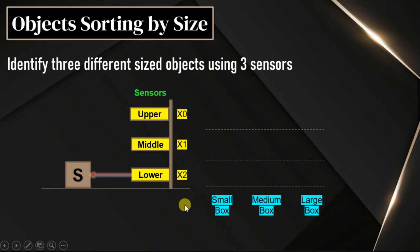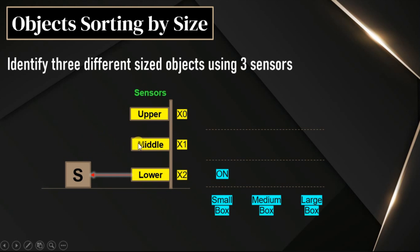For example, when a small box appears, since the sensors are in vertical arrangement and the box is only small size, only the lower sensor can detect it. That means whenever the small box appears, the lower sensor output is on. The middle and upper sensors have no box before them, so their outputs are off.